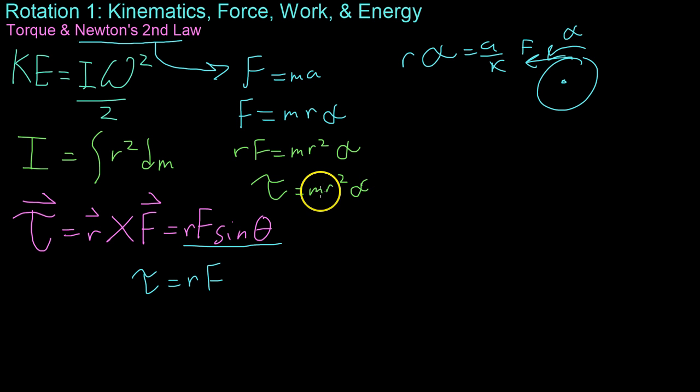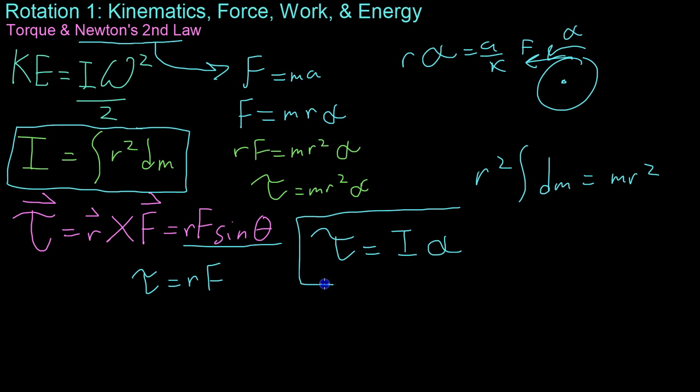From here, though, if you'll recall, our definition of rotational inertia, or moment of inertia, is essentially just R squared times the integral of DM. Well, R squared integral DM equals MR squared. Therefore, the torque equals I times alpha, just based on our previous observations and known equations.